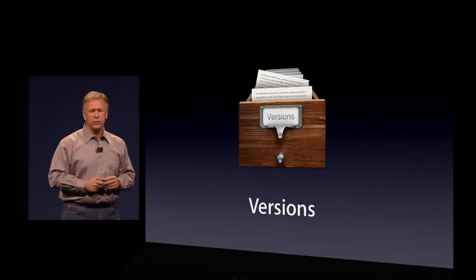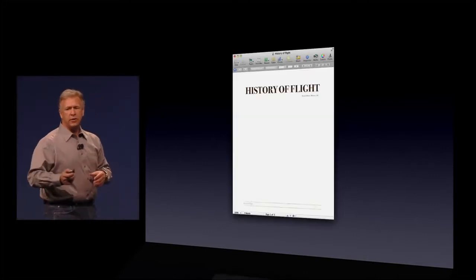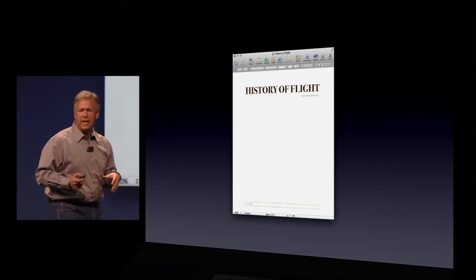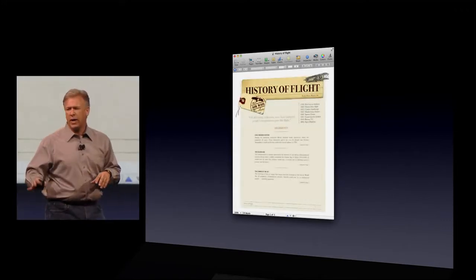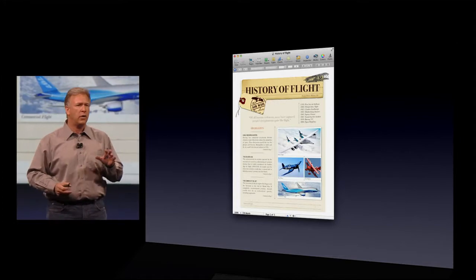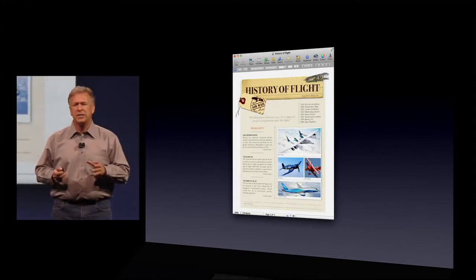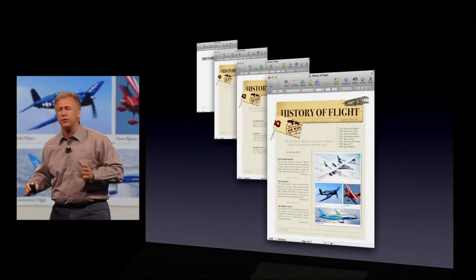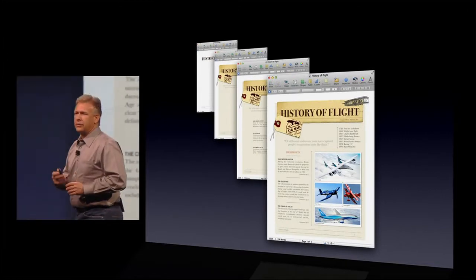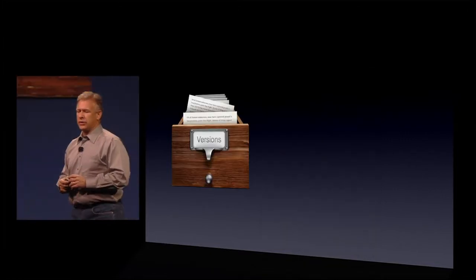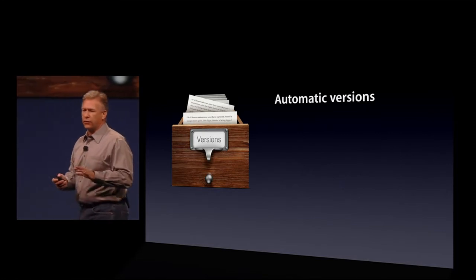And that's called Versions. So you're working on a document, you're entering the text, you're formatting, you're adding copy, you're adding graphics, and all along, auto-save is saving your document. It's saving all these versions of your document as you're working. So we call that Versions. It's automatic — you don't have to do anything. We'll do it for you with Lion.